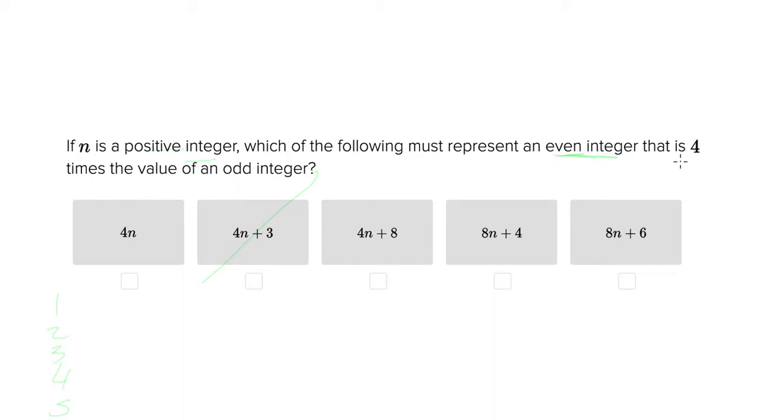Now the next requirement that our answer has to have is that it is four times the value of an odd integer. So we're going to go ahead and plug in these numbers and check which of these satisfy that requirement. So for one, you'd have four times one, which is four. And four divided by four gives you one, which is odd. So this one does. Four n plus eight. So four times one is four plus eight is twelve, and twelve divided by four gives you three, which is odd. It also does it.